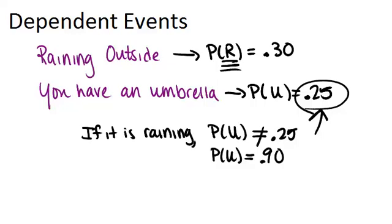So if we already know that it is raining, the probability that you have an umbrella is not 25% anymore because we already know it's raining. There's probably a much higher probability that you have an umbrella. Let's say the probability then that you have an umbrella is 90%, because when it's raining you're much more likely to have your umbrella with you.